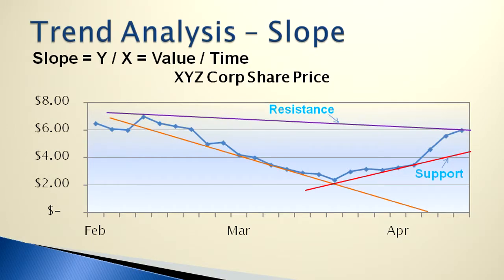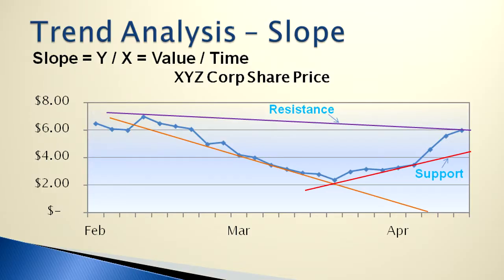It's all about slope. An investor will often connect all the low points, so you've got a line trending down, connect the highest points, so you've got a line that looks a little bit more like a roof, and you're also projecting the trends going forward.